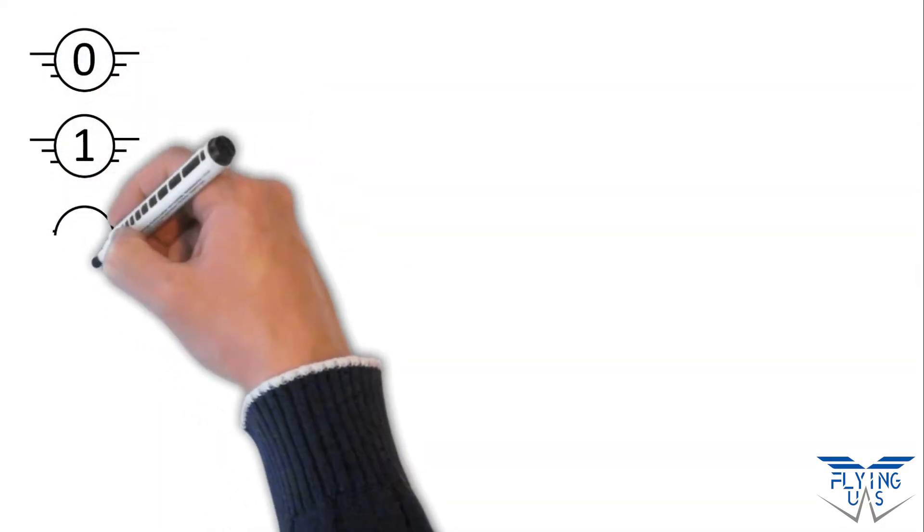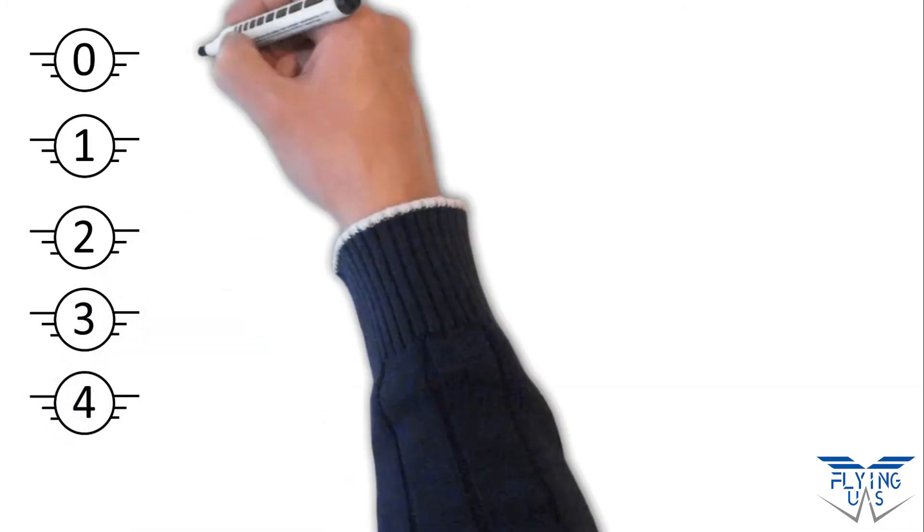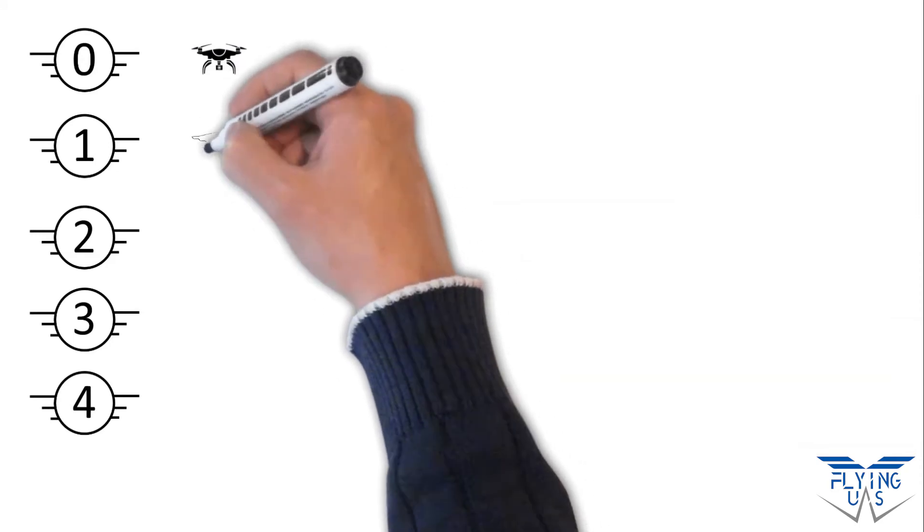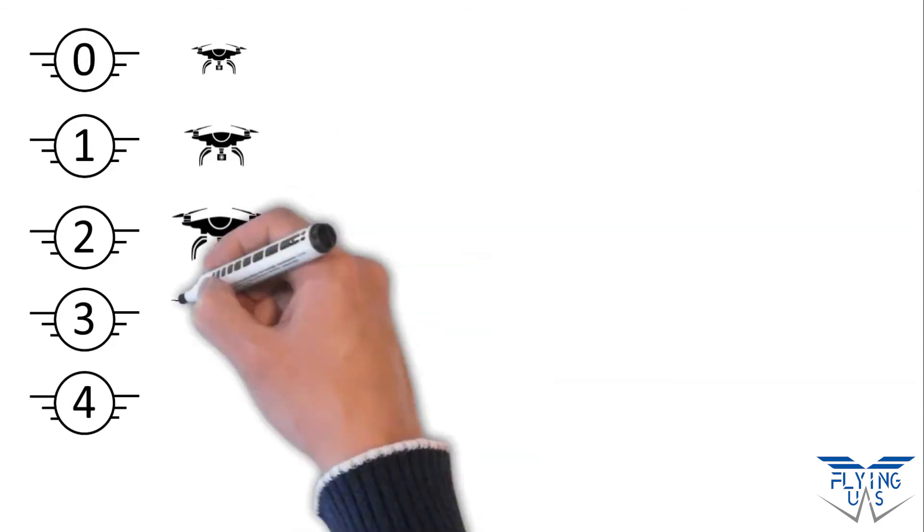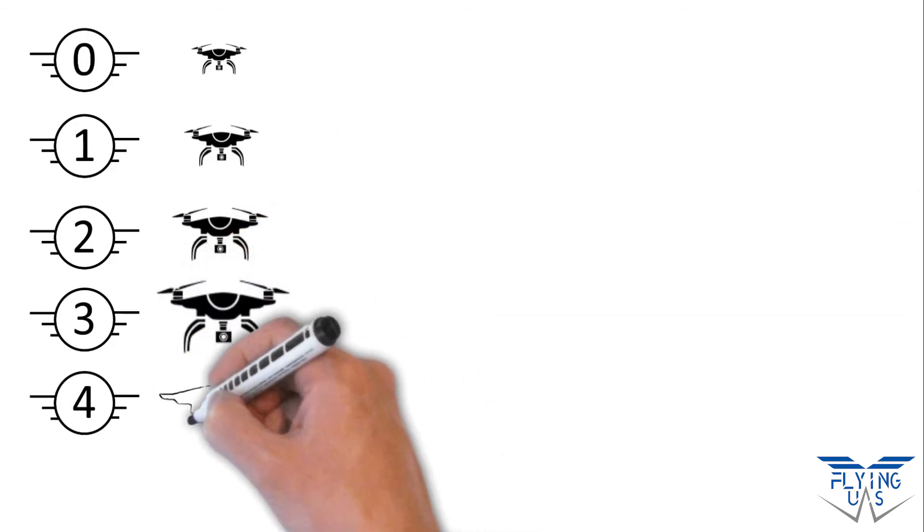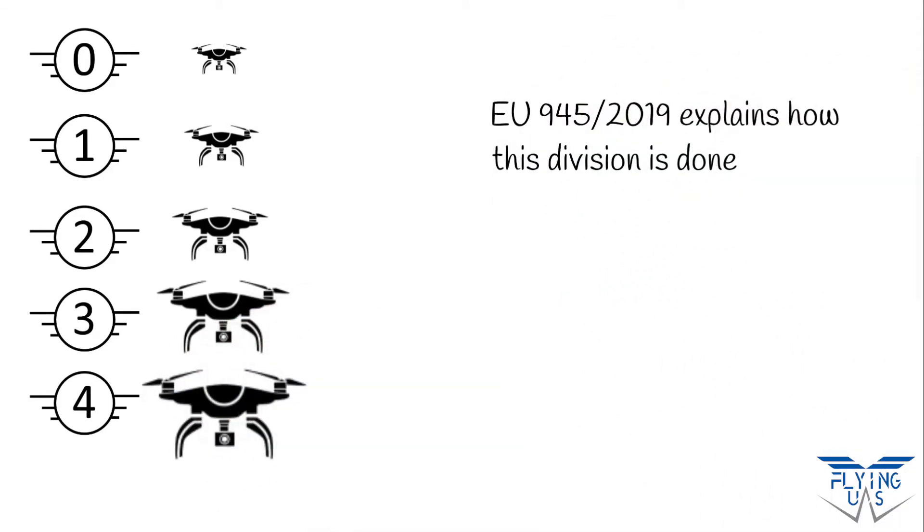Drone C-classes are labels from C0 to C4 that every drone must have from 2022. The classification depends on the characteristics of the drone such as speed, weight, sensors, geo-awareness, and so on. This classification was made to facilitate the operator's life because based on it, an operator knows in which subcategory he can operate.